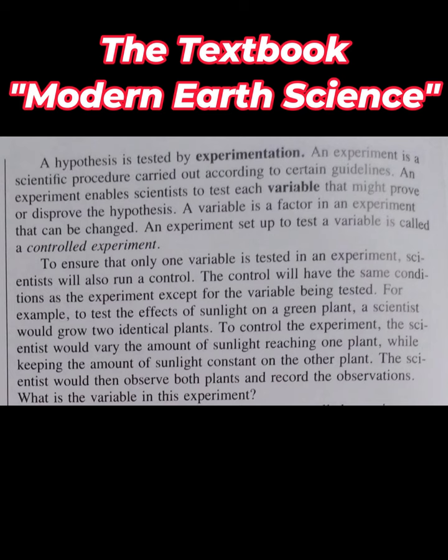For example, to test the effects of sunlight on a green plant, a scientist will grow two identical plants. To control the experiment, the scientist would vary the amount of sunlight reaching one plant while keeping the amount of sunlight constant on the other plant. The scientist would then observe both plants and record the observations.